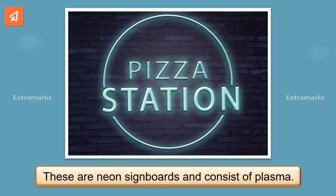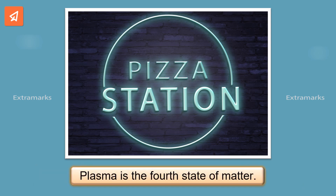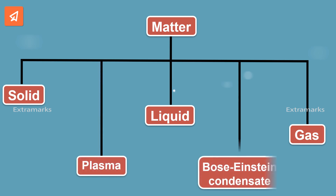These are neon signboards and consist of plasma. Do you know what plasma is? It is the fourth state of matter. We all are aware of the three states of matter, i.e. solid, liquid and gas. These days, scientists consider five states of matter, which include plasma and Bose-Einstein condensate in addition to solid, liquid and gas.